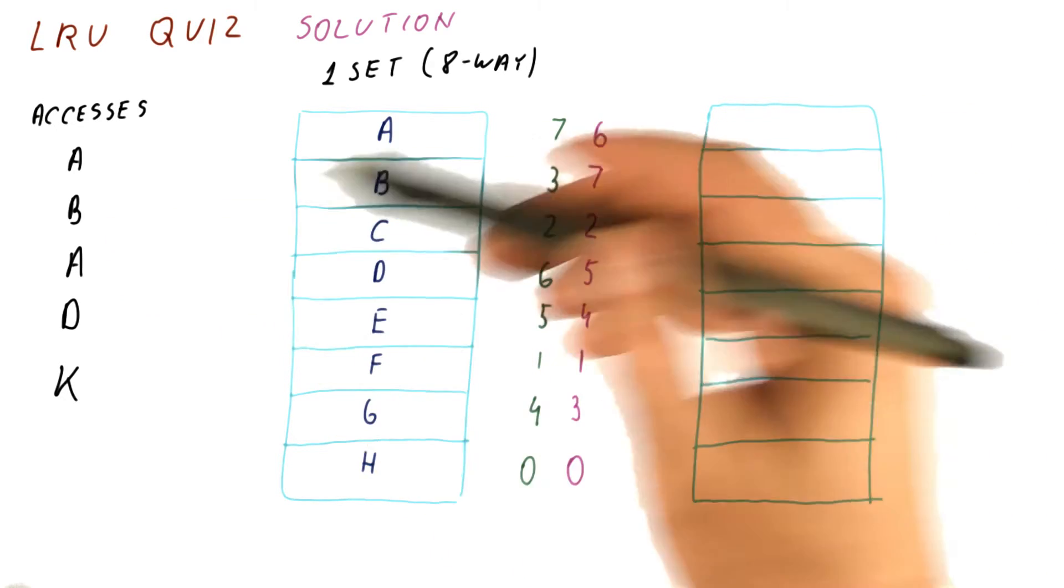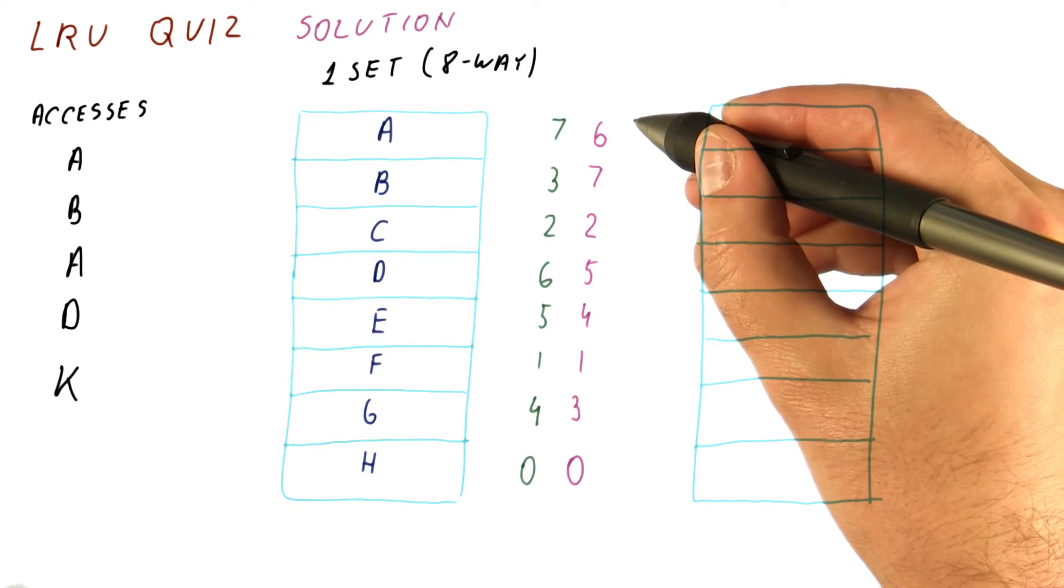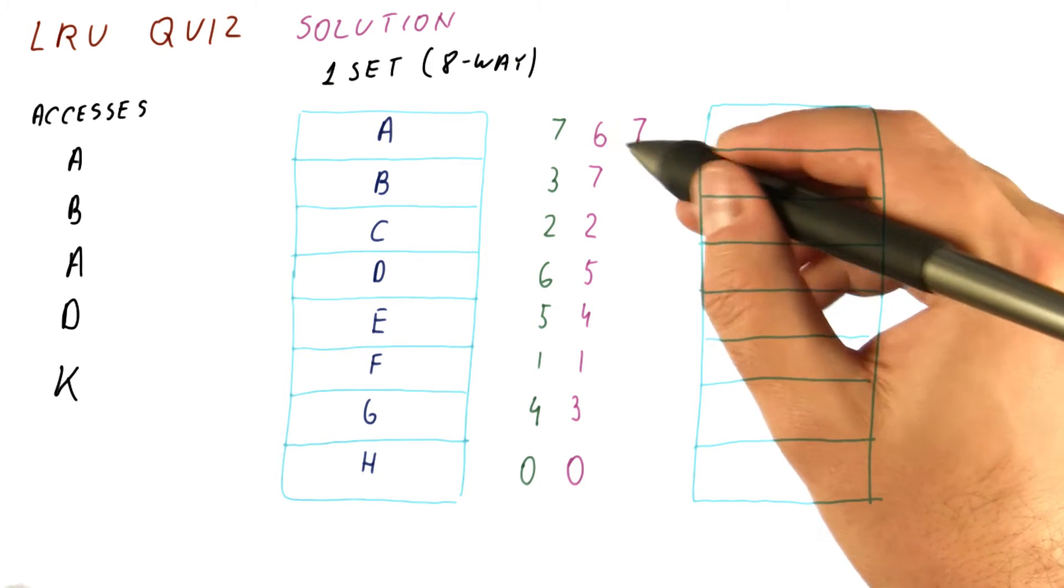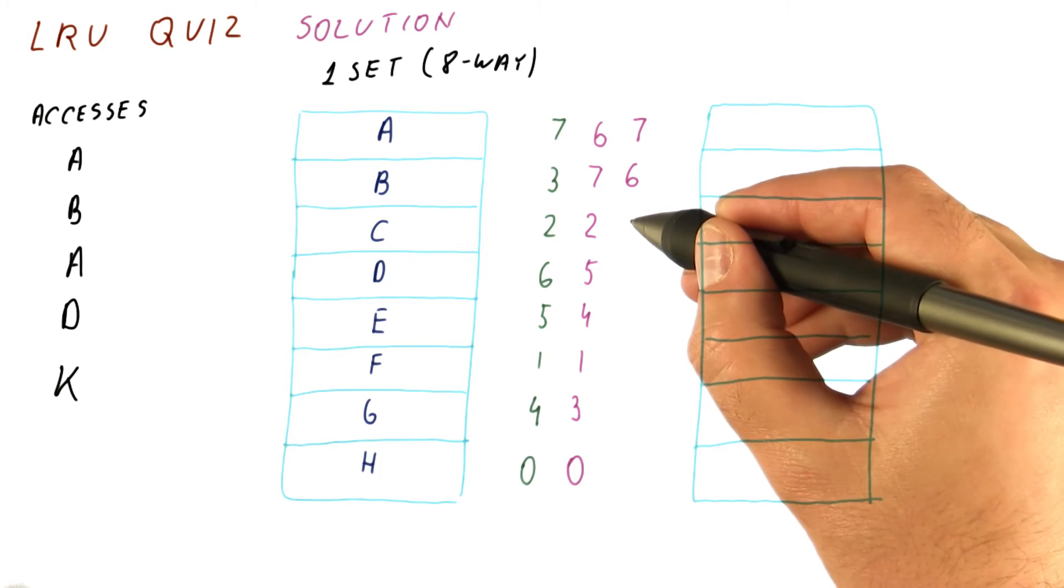Next, we access A again. This counter becomes 7. All of the counters above 6 are decremented, so this is really the only change.